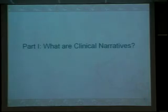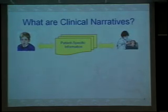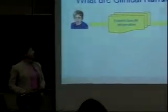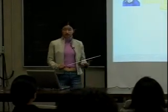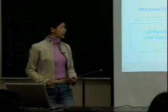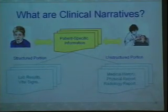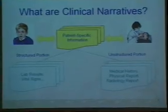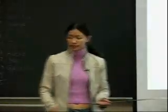What are clinical narratives? Usually when a patient goes to the hospital, there is documentation as a result of the encounter between the patient and their healthcare system. This documented information is called patient-specific information, and it usually contains two portions: the structured portion and the unstructured portion. The structured portion refers to lab results, vital signs, and so forth, coded in charts. The unstructured portion — medical history, physical report, radiology report — is written as free text. What we call clinical narratives is just the unstructured portion of the patient-specific data.